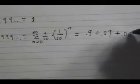This simplifies to 0.9 plus 0.09 plus 0.009, and so on.